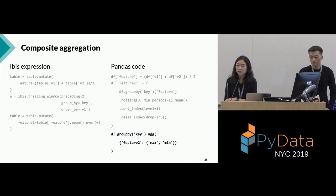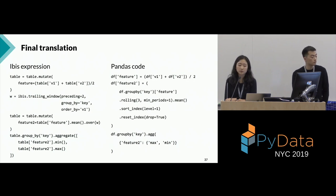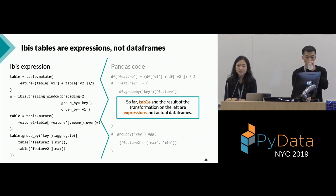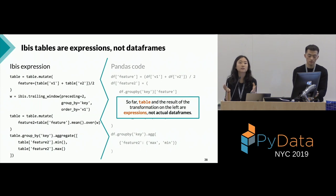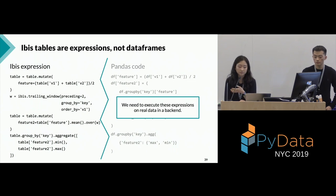For group-by and windowed aggregation in IBIS, we construct an IBIS window. The argument is not necessarily window size but a preceding window bound — we're doing the current row and looking back two rows, equivalent to rolling three. We call table.mutate again to create feature two, which is a mean over the initial feature given our IBIS window. For the group-by aggregation, we call table.group_by, group by the same key, and call aggregate, calculating the min and max of our feature two column. One important difference from pandas: in IBIS these are table expressions and not actual data frames. We're separating how we express what we want to do from executing it.